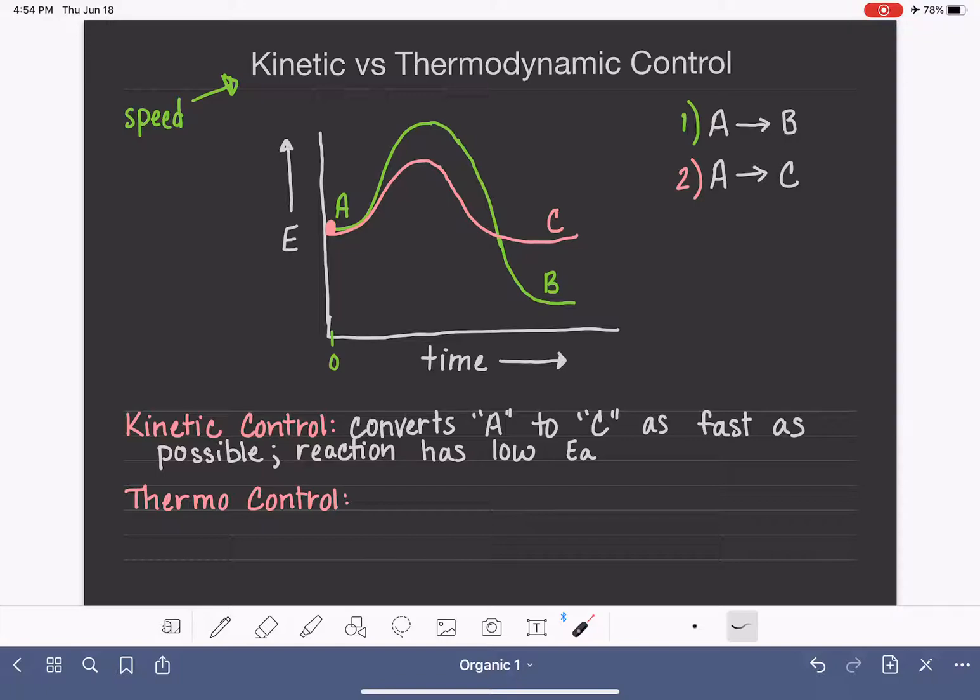So kinetic control, which is represented by the pink graph here, is just simply choosing a reaction pathway that has the lowest possible activation energy, which will cause the fastest conversion from reactant to product.